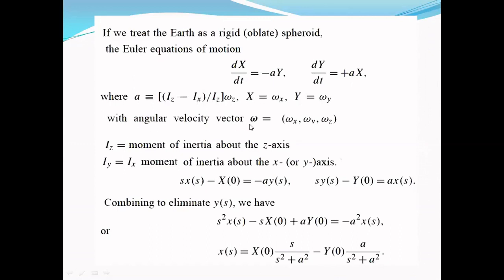X = ωx, Y = ωy, with angular velocity vector ω = (ωx, ωy, ωz). Iz is the moment of inertia about the z-axis, Iy is the moment of inertia about the y-axis, and Ix is the moment of inertia about the x-axis. Iy = Ix.